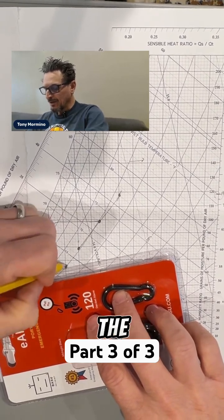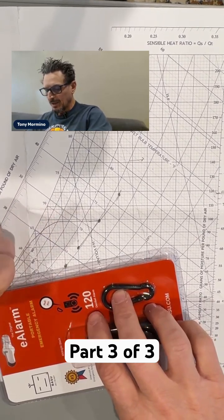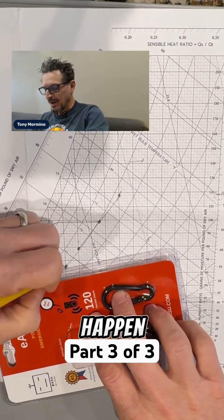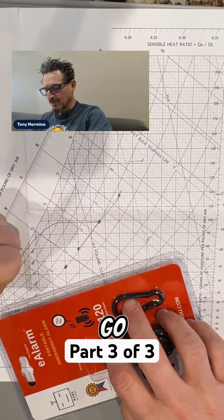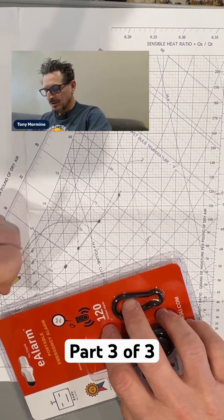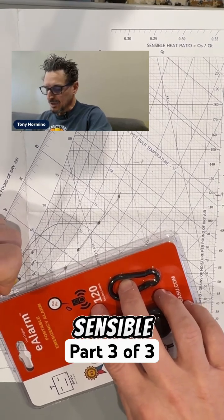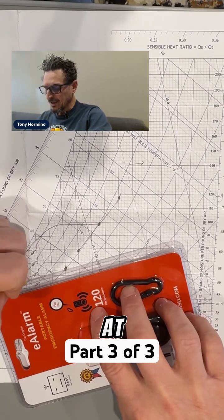Now, depending on the sensible heat ratio of the space, if it's designed perfectly, that might happen. Or I might need to have some reheat, which would go from here to here to hit that sensible heat ratio, whatever it is at that time.